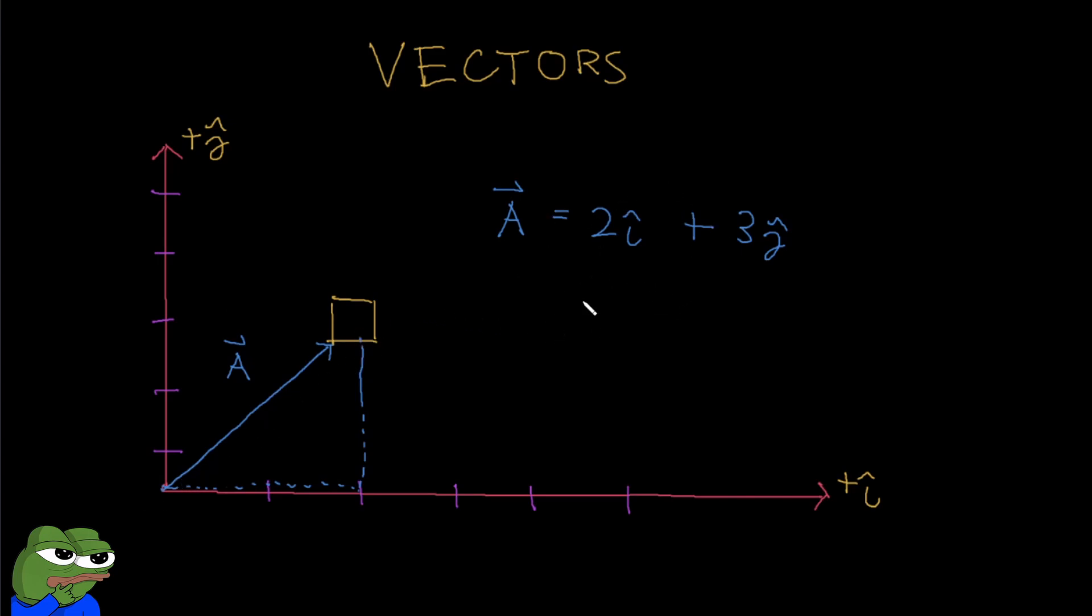Now, this vector notation is actually quite powerful, because it can tell us two different things. The actual magnitude of A, which is basically how much I traveled from here to here directly. It can also tell us the direction of A, described by this angle over here.